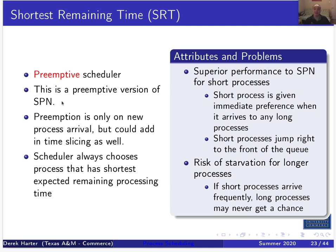For Shortest Remaining Time, we preempt only on new process arrival. Instead of a timeout or quantum, every time a new process arrives we make a new scheduling decision. We do this because if a short process arrives, we may want to preempt the current long-running process, let the short process run to completion to get it out of the system, then go back to executing the long process.